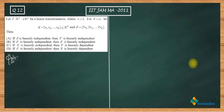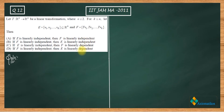Let us first have a look at this problem. It says: let T be a linear transformation from Rⁿ to Rⁿ, where n is greater than or equal to k, and k is a natural number less than or equal to n. They define set E and set F, both subsets of Rⁿ. The question asks: if E is linearly independent, is F linearly independent or dependent? And conversely, if F is linearly independent, is E linearly independent or dependent?